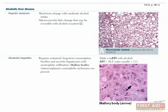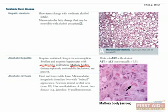With sustained long-term consumption, patients can go on to develop alcoholic hepatitis. Liver biopsies will show swollen and necrotic hepatocytes, neutrophilic infiltration, and the distinctive Mallory bodies. Mallory bodies are eosinophilic inclusions in the cytoplasm of hepatocytes. As mentioned, the AST levels are higher than the ALT levels, typically with a ratio of over 1.5. In severe cases of alcohol abuse, cirrhosis can develop. At this stage, the damage is irreversible.